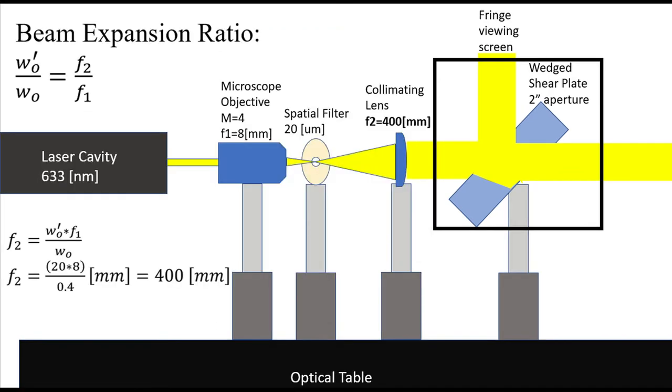Using the beam waist W knot calculated in the second lab and the focal length of the microscope objective, we were able to find the beam divergence angle. This angle is the same for the collimating lens, and since we know the size of the beam at its output, we were able to solve for its focal length.